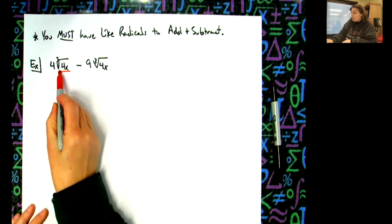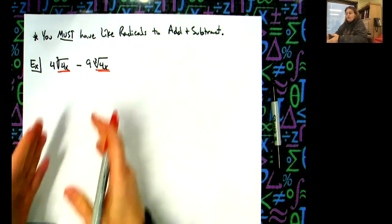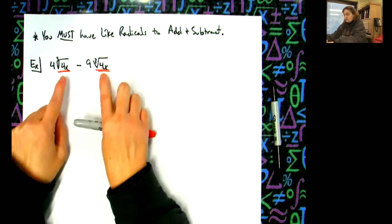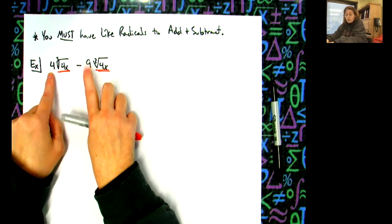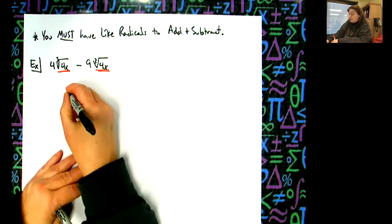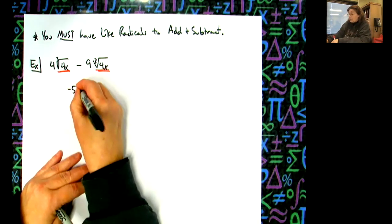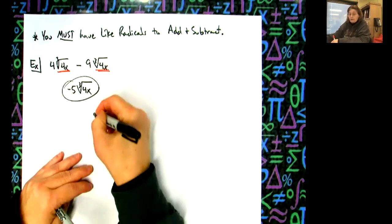So I can put them together just like I would like terms. I just take care of the coefficient in front: 4 minus 9 gives me negative 5, so this is -5∛(4x). Like radicals get a like answer, just like like terms get a like term answer.